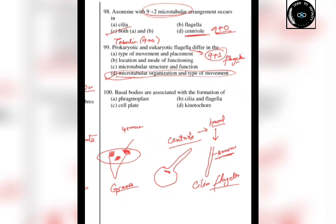The last question is about basal bodies. Basal bodies help with the formation of cilia and flagella. Basal bodies are associated with the formation of cilia and flagella. So here we have completed all 30 questions from the cell chapter. Hope all your doubts are cleared. See you in the next video — bye bye!